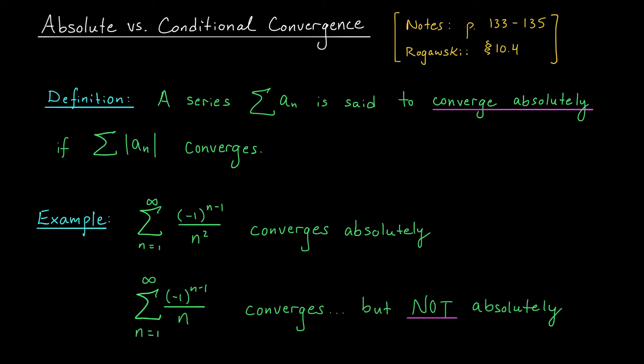Before we do, however, it will be important to distinguish between two types of convergence that can occur for a series with both positive and negative terms: absolute convergence versus conditional convergence. As you'll see in this video, there are certain nice properties that hold for absolutely convergent series that don't hold up so nicely for conditionally convergent series.